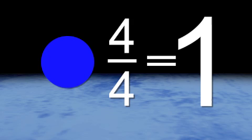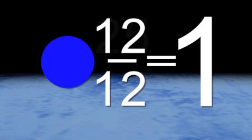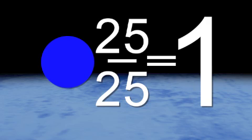Whenever you have one complete object, you have one. So five fifths, or twelve twelfths, or twenty-five twenty-fifths can each be called one whole, or just one, because you have all the parts.